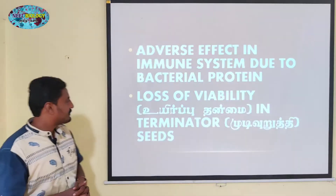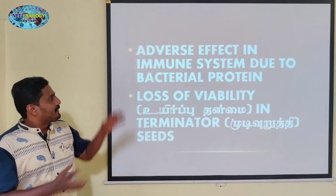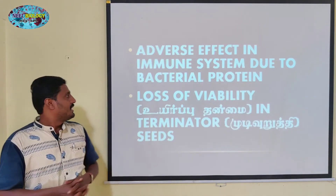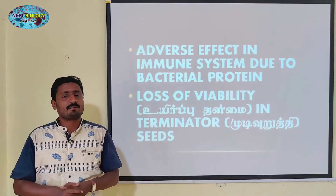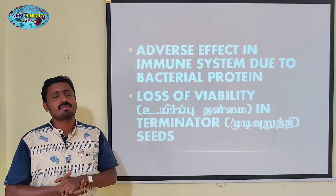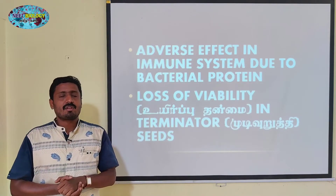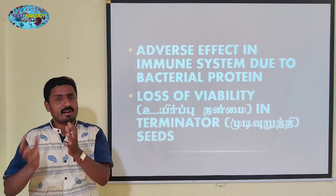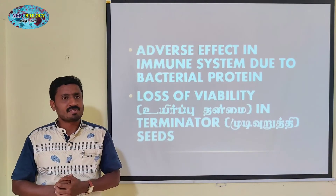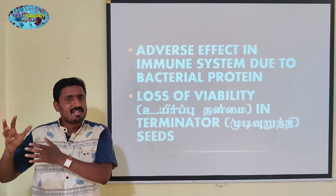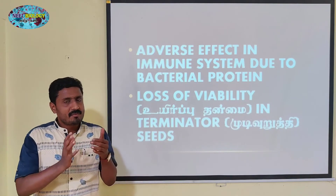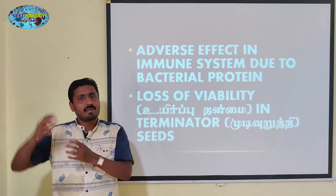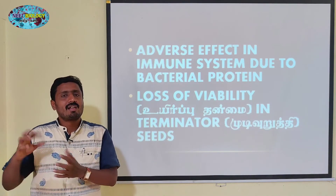Loss of viability. There is Bt cotton — it is produced using tissue culture. That is a big one. We can make a cotton crop. There is a wild crop and a genetically modified crop. Bt cotton has a particular DNA. It is a wild crop versus a genetically modified type.